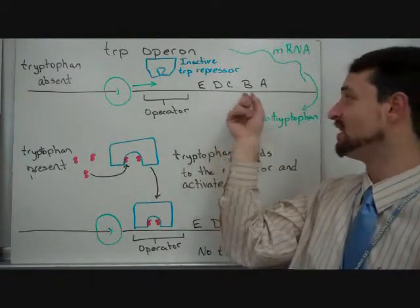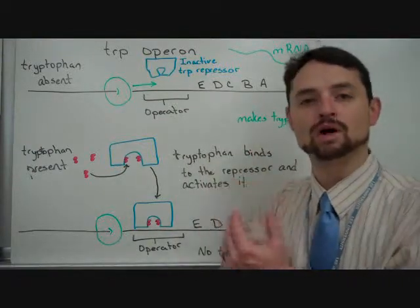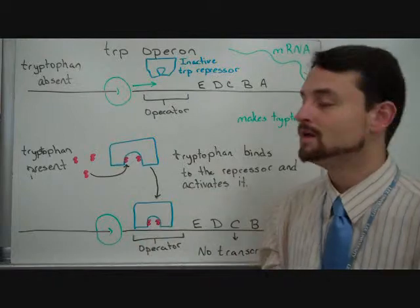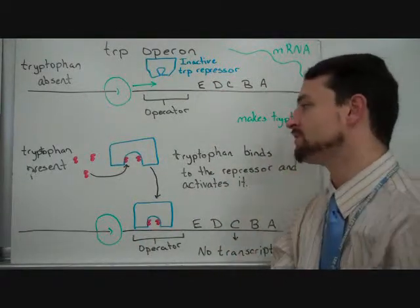Now, what you find here is that these are enzymes, A, B, C, D, and E, that actually all work together to make tryptophan. So, whenever they're transcribed, the mRNA eventually will make proteins that will make tryptophan.